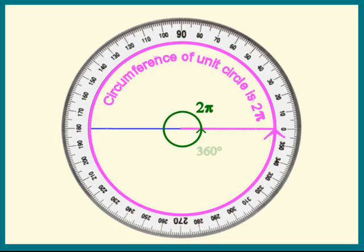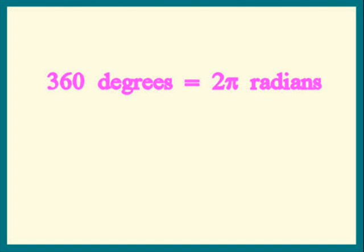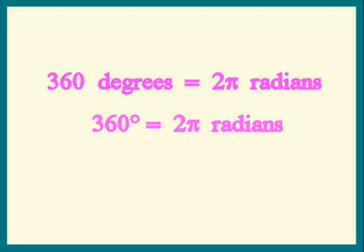Now we've found a relationship between degrees and radians. 360 degrees equals 2 pi radians. Let's write this equation in degree notation. Can we simplify it? Yes, we can divide both sides by 2. That gives us 180 degrees is pi radians.